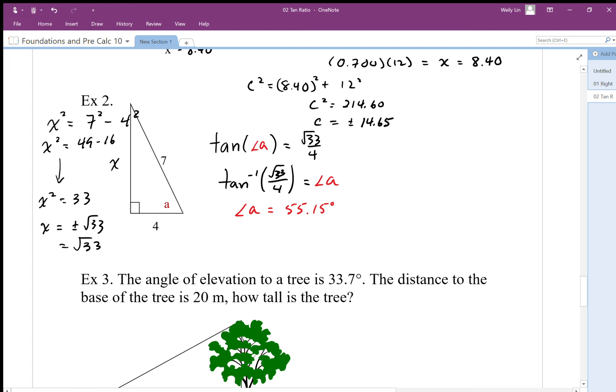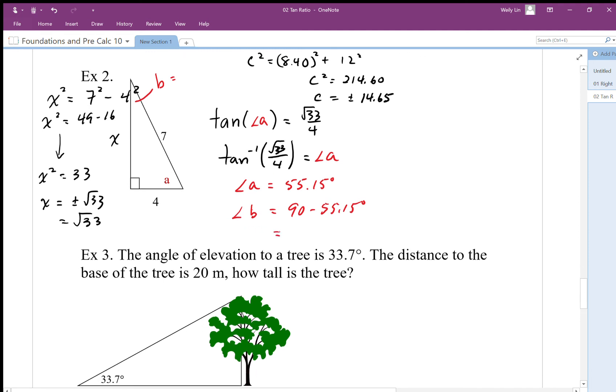So I was a little bit off, I think my picture is a little bit off, but that angle A is 55.15 degrees. So the angle B in here, which I'll call B, is going to be 90 minus 55.15 degrees. So solving for angle B I end up with 34.85 degrees.